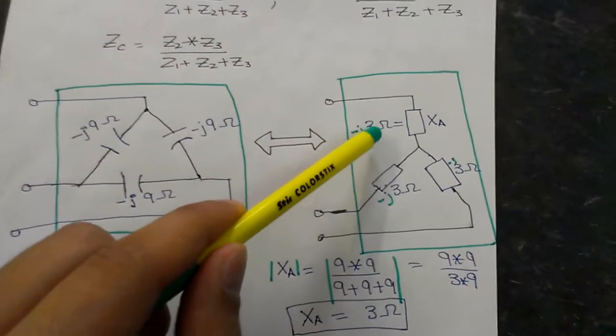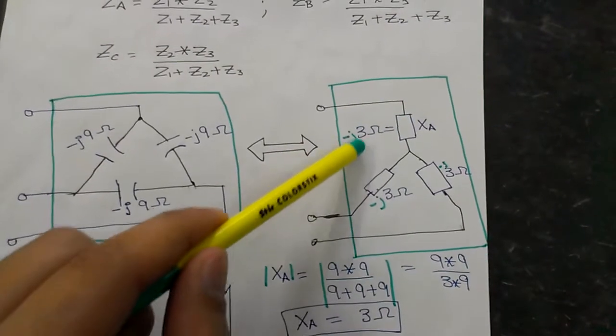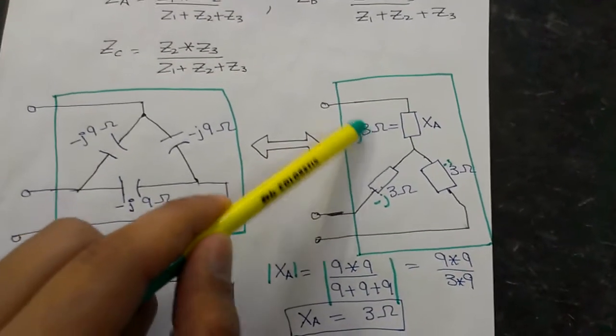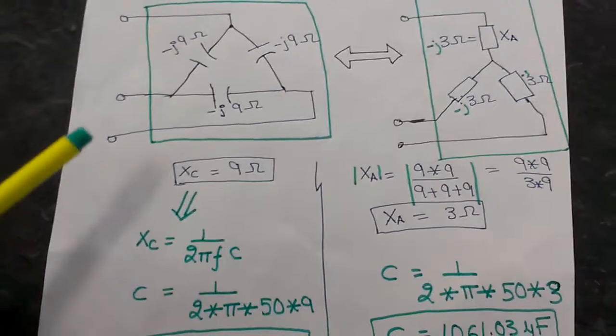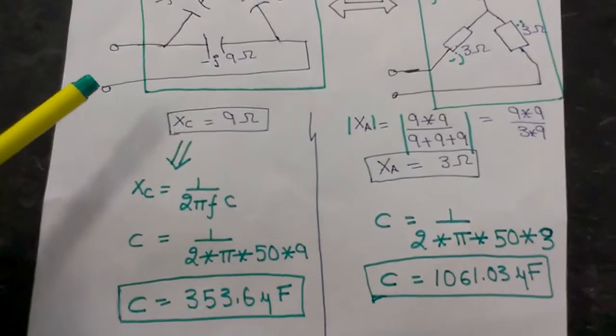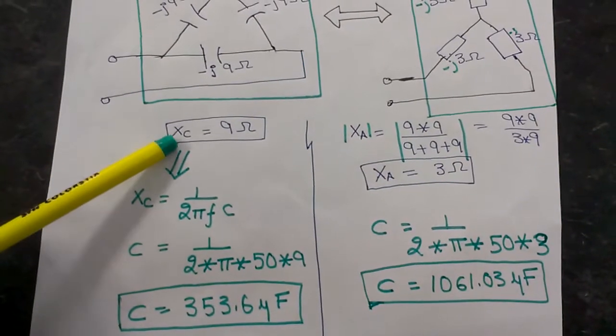I am again putting the direction here, that is minus j, so the magnitude will be three ohms. So now let's calculate the value of capacitor in both of these cases. Here X is equal to nine ohms.